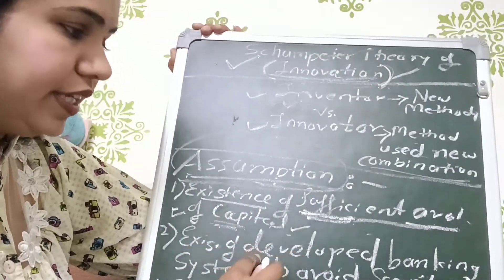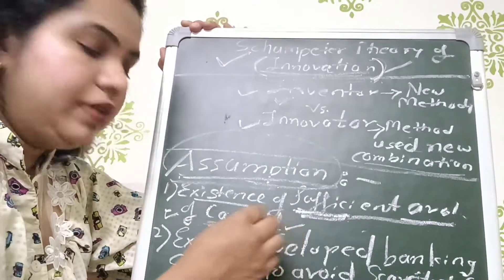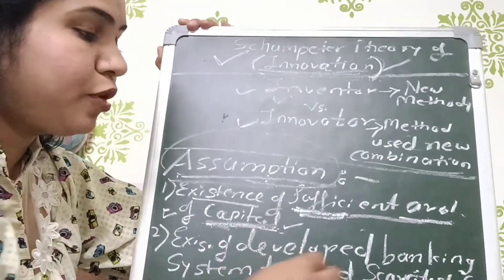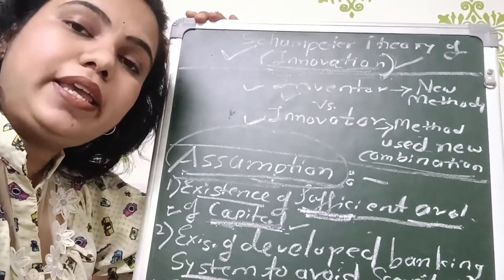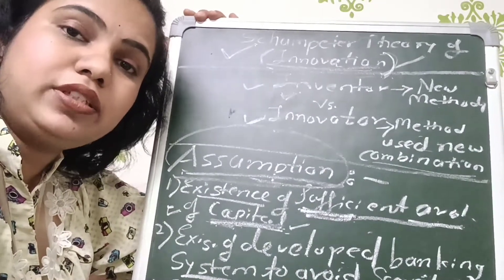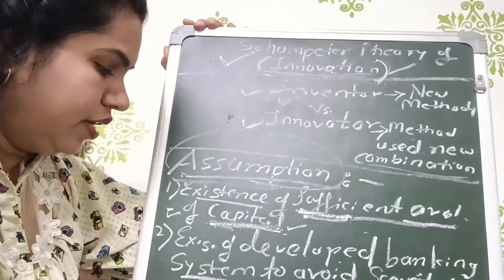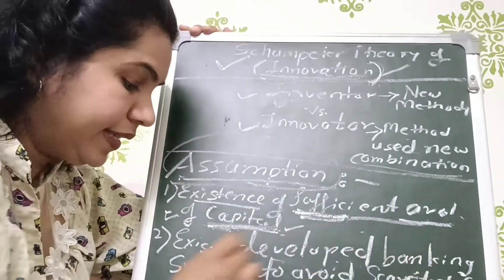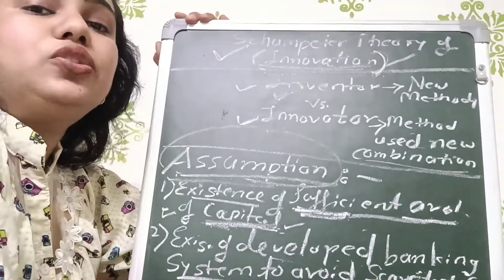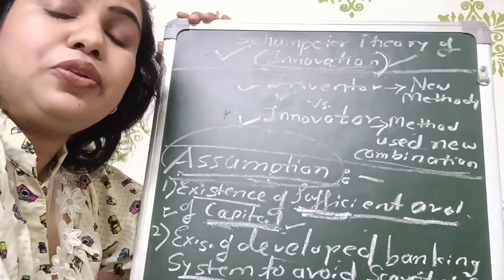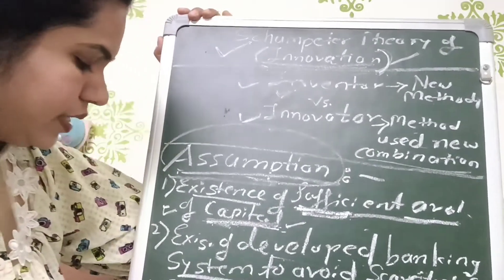The second assumption is the existence of a developed banking system to avoid scarcity of capital. Capital becomes available to manufacturers when proper banking sector services are available. If the banking sector is lacking in a country, innovation is not possible — you can't raise funds easily. Private financiers charge a higher rate of interest, which is very difficult for any manufacturer to pay. A developed banking system provides capital at a nominal rate of interest so you can innovate, launch new products, and grow your business.